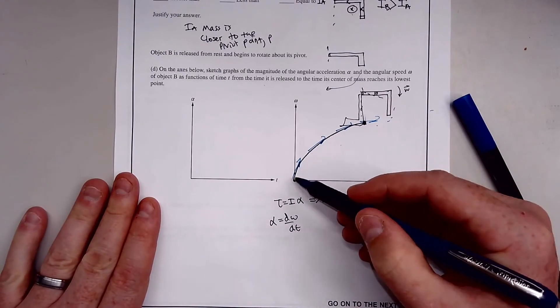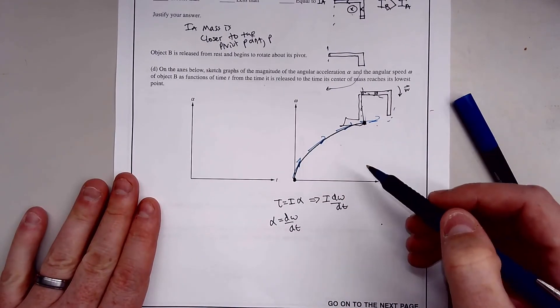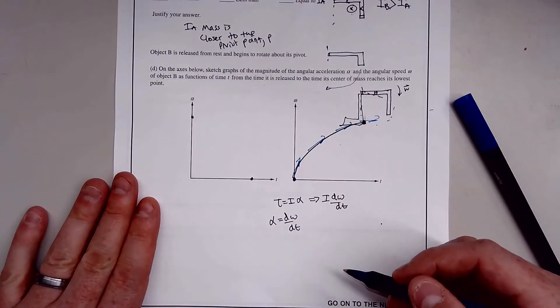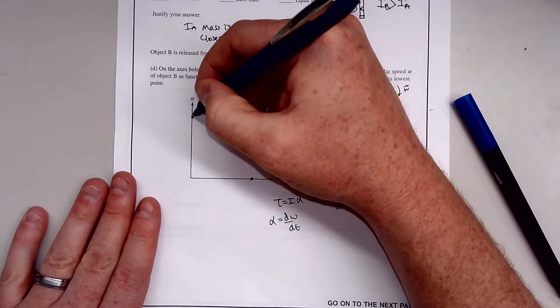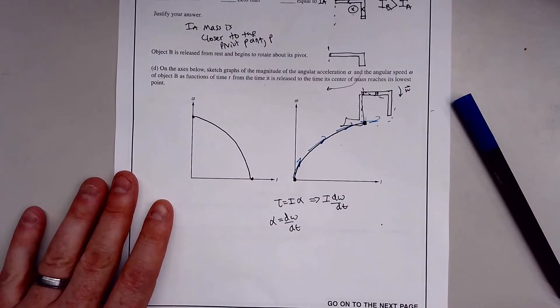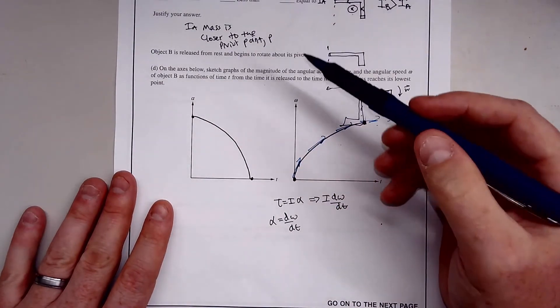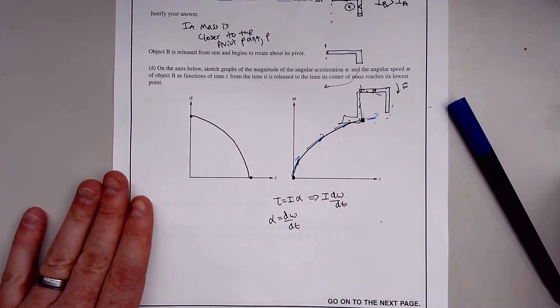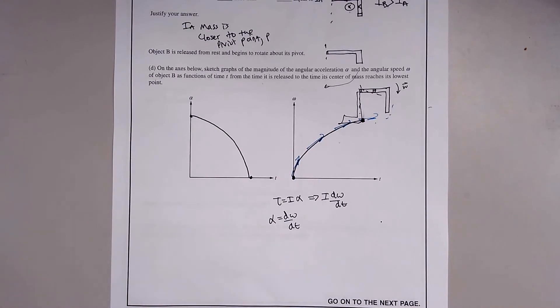The slope of this is our angular acceleration. So we're going from very high to zero right here. So we're going for something like this. I bet they're just mirror images of each other like such. Very high angular acceleration, and as we slowly go down to zero. I think that'll work.